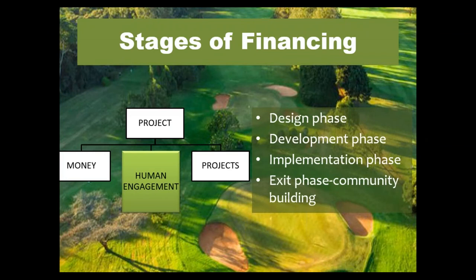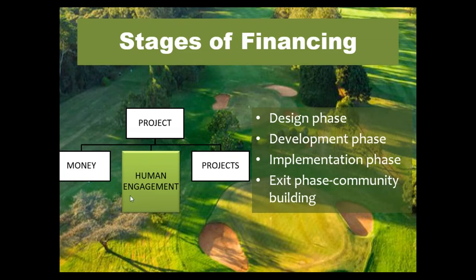Whenever we think about a project, we have to know that project finance goes through multiple stages: the design phase, the development phase, implementation phase, and exit phase where we do community building. The financing strategies for each of these phases differ substantially, but the key, at the center of all that, is the human engagement project. Most people, when they think about projects, are talking about just the project itself and the money, and they never think about the people — the role of the humans who are going to use that project. Projects never succeed if the human element is overlooked from the word go. So today I want us to focus on that.